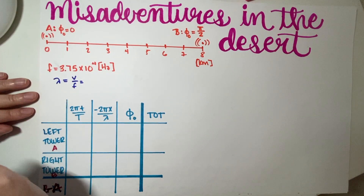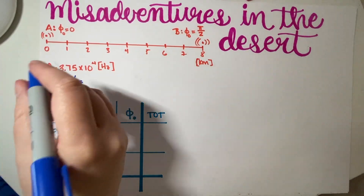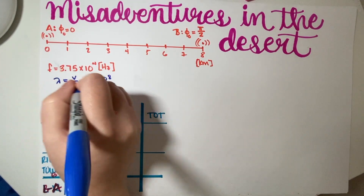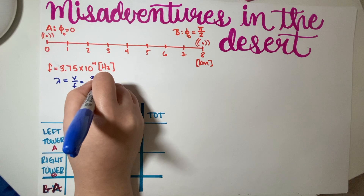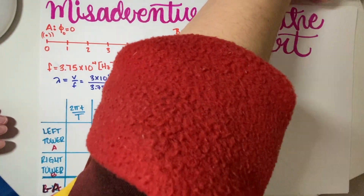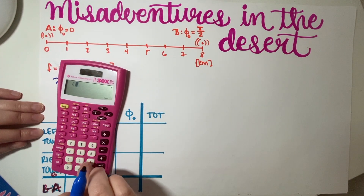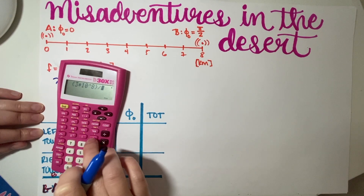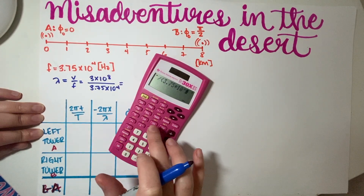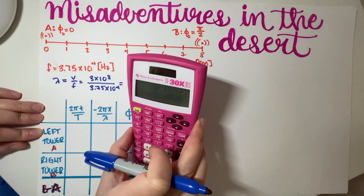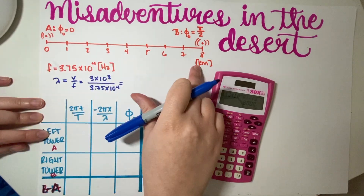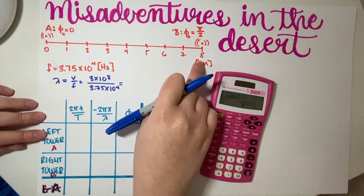Lambda equals velocity divided by frequency. These are radio waves, which means we use the speed of light: 3 times 10 to the 8. Divide by frequency 3.75 times 10 to the 4. That gives us 8,000.